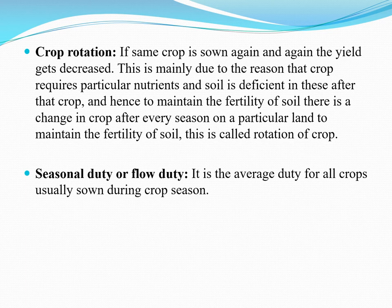Generally, the usual crop rotation patterns followed are: jowar, gram, and fallow; wheat, jowar, and gram; cotton, wheat, and gram; and rice and gram. These are the alternate crops which are grown in crop rotation.